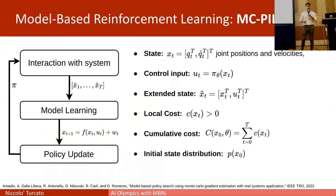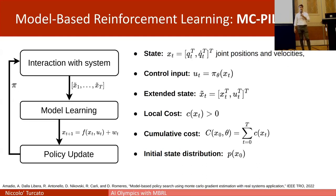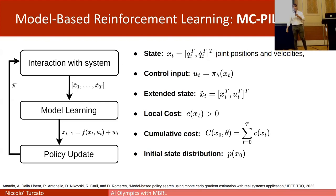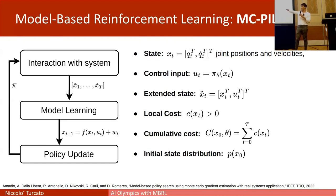We will now present a high-level view of the model-based reinforcement learning algorithm we used to solve the tasks of the challenge. The algorithm is MC-PILCO, which stands for Monte Carlo Probabilistic Inference for Learning Control. It is a policy gradient algorithm particularly suited for mechanical systems. Its architecture is classical for model-based RL, composed of an outer loop with three main stages: interaction with the system, a model learning phase, and a policy update.